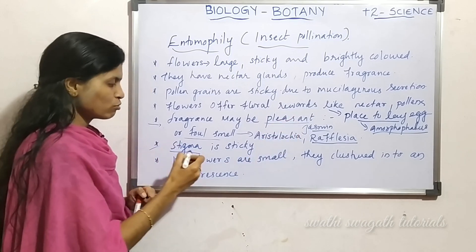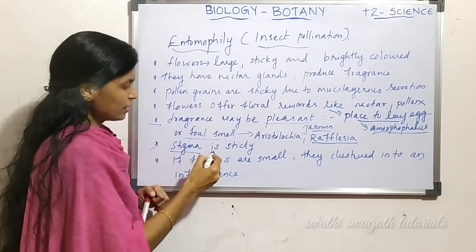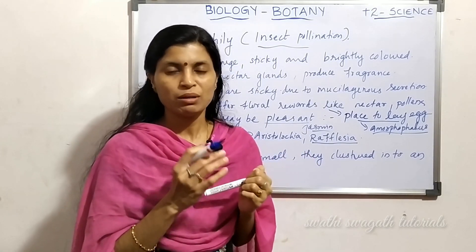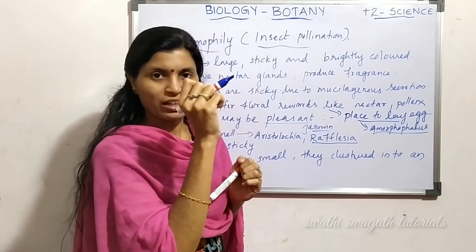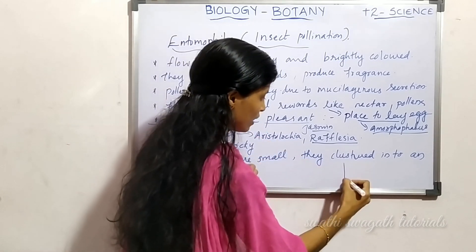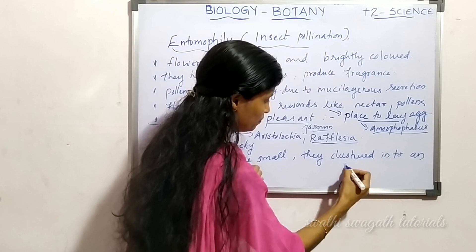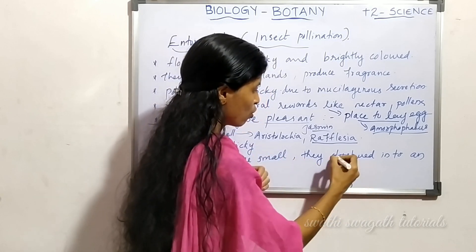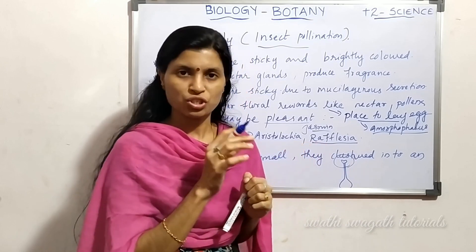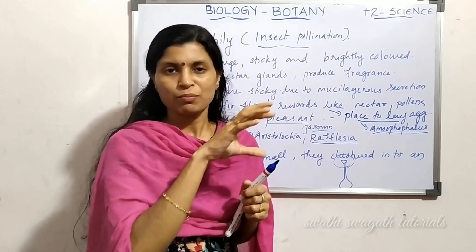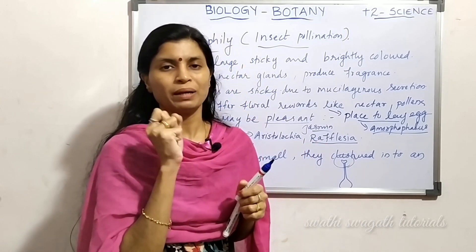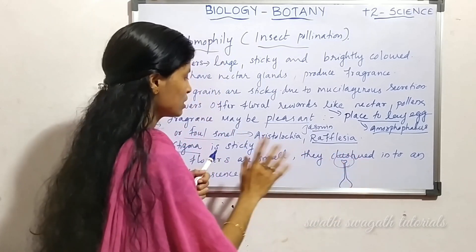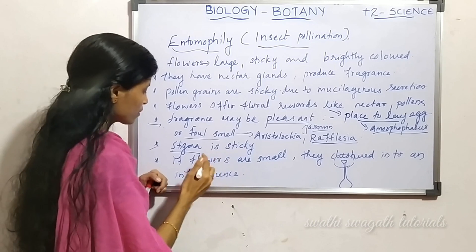Another character is the stigma. The stigma is sticky and receptive, meaning it can receive pollen grains. The stigma is sticky so that pollen grains present in the vicinity can be trapped. That is, the stigma is sticky.